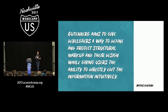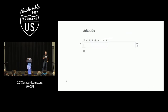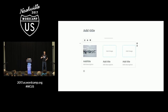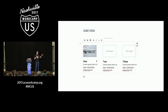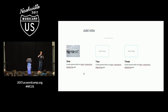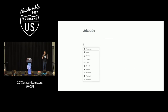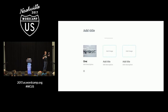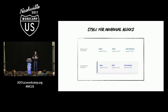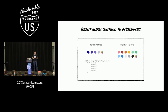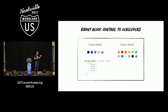He also said, 'Gutenberg aims to give developers a way to define and protect structural markup and their design while giving users the ability to directly edit the information intuitively.' In English terms, you as a developer or designer should be able to figure out how things should be laid out and still give the end user control over the individual content. For example, you can provide a template of three buckets — each with an image and text underneath — so people can just fill in the content automatically. You can even make it so they can't save unless they've done it properly. You can style individual blocks, both the ones that ship and ones that come in via plugins.